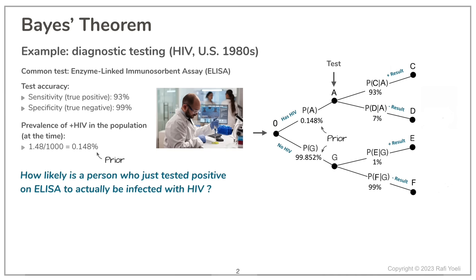Now, we are mainly interested in the probabilities of nodes C and E that cover the two positive result outcomes. Since the event of our person entering the lab and the ELISA test are two separate events, the probability that this person tested positive is simply the multiplication of the probabilities of the two. This comes out as 0.13764% and 0.99852% respectively for points C and E.